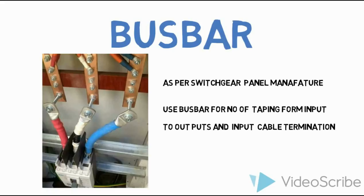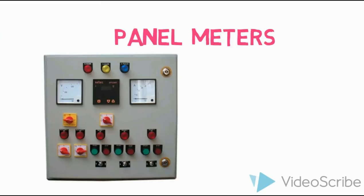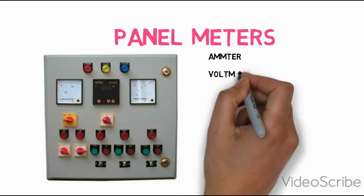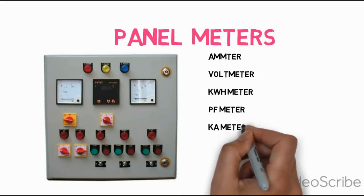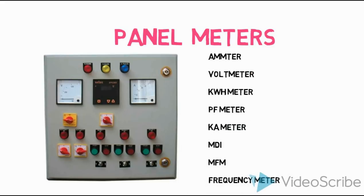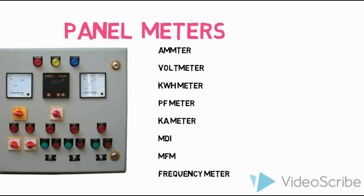Next are panel meters. Panel meters include voltmeter, ammeter, kilowatt-hour meter, power factor meter, kVA meter, MDI meter, multifunction meter, and frequency meter. There are many types of meters used in panels to measure current, voltage, and power factor.